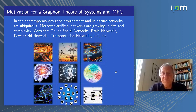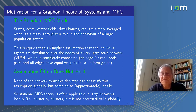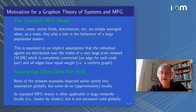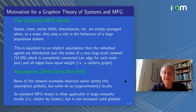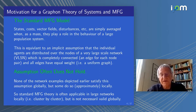These are complex and non-uniform. For the standard Mean Field Game model, states, costs, vector fields, disturbances and so on are simply averaged when, as a mass, they play a role in the behaviour of a large population system — literally a one-over-n summation. This is equivalent to an implicit assumption that individual agents are distributed over the nodes of a very large-scale network (VLSN), which is completely connected with an edge for each node pair, and all edges have equal weight — which we refer to as uniformity. However, this assumption often does not hold. None of the network examples depicted earlier satisfy this pair of assumptions globally, but some do approximately locally.